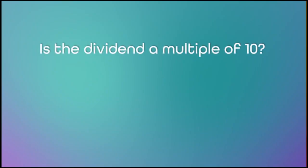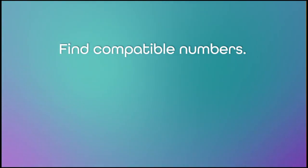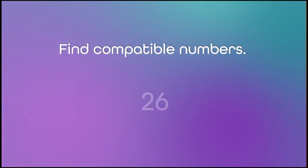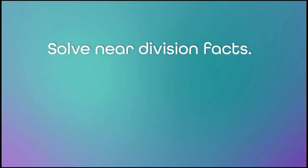First, check to see if the dividend is a multiple of 10. 260 is the same as 26 tens. Smaller numbers are easier to work with. But 26 divided by 4 still isn't a basic fact. We should find compatible numbers — numbers that are easy to work with mentally. Do you know any multiples of 4 that are close to 26? How about 24 and 28? 26 is between them.